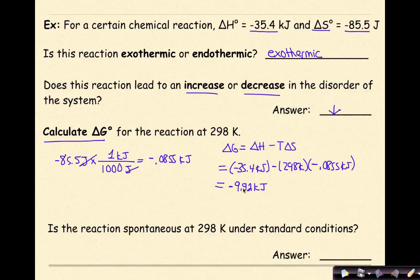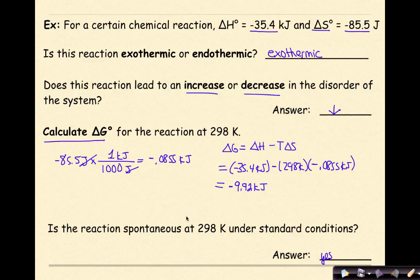When you work this out, you should have calculated negative 9.92 kilojoules. Our delta G is negative, so is this reaction spontaneous at 298 K under standard conditions? The answer is yes, but just barely because it is negative 9.92 kilojoules. If our resulting delta G was positive, it would be non-spontaneous. But in this case, it is negative, so it is spontaneous.